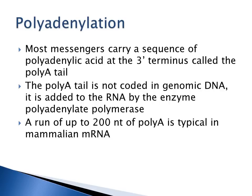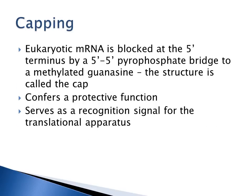In polyadenylation, messengers carry a sequence of polyadenylic acid at the 3' terminus called the poly-A tail — a series of A's at the 3' end. These A's are not coded in the genomic DNA; they're added onto the RNA using an enzyme called polyadenylate polymerase. You can get a run of up to 200 nucleotides of this poly-A tail in a mammalian messenger RNA. In eukaryotic messenger RNA, capping blocks the RNA at the 5' terminus with a 5' pyrophosphate bridge to a methylated guanosine, called the 5' cap. This cap provides a protective function and serves as a recognition signal for the translational apparatus.